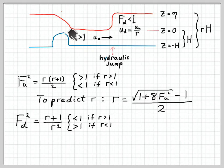We can also do this in terms of the Froude number, which doesn't involve h. Upstream Froude number squared is just r times r plus 1 divided by 2. If you analyze this function, you find that it's greater than 1 if r is greater than 1 and less than 1 if r is less than 1. In the situation we have sketched here, where the water gets deeper as it passes the hydraulic jump, r is greater than 1 and that corresponds to an upstream Froude number greater than 1.